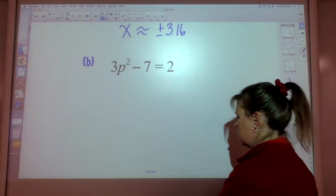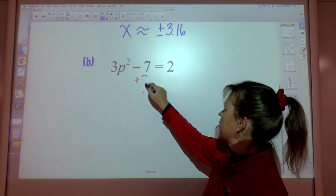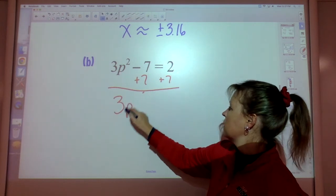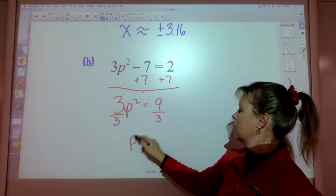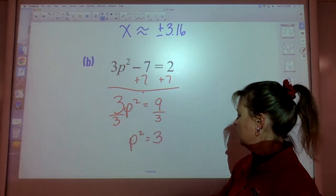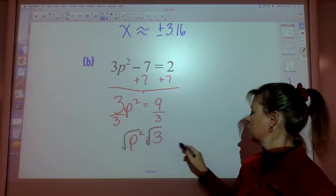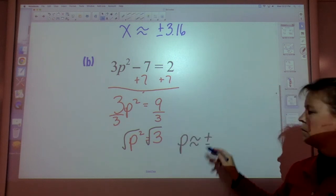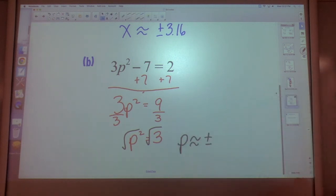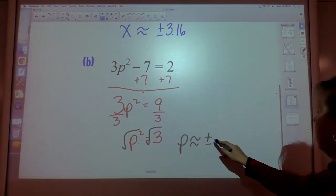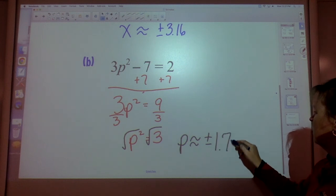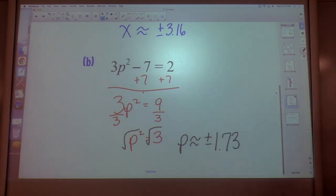Last one. We'll just do this together. We'll add 7 to both sides. Get 3p squared equals 9. Divide by 3 on both sides. p squared equals 3. Square root on both sides. p is approximately plus or minus. Okay, I said we'll do it together, but I just did that really fast. So you still might have to pause it. Square root of 3 equals 1.73. But don't forget it's plus or minus 1.73.